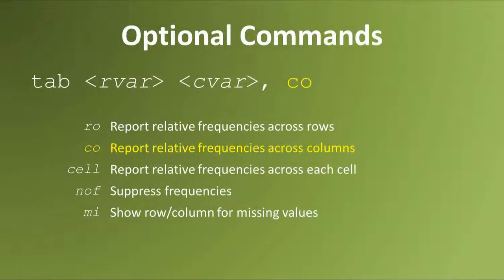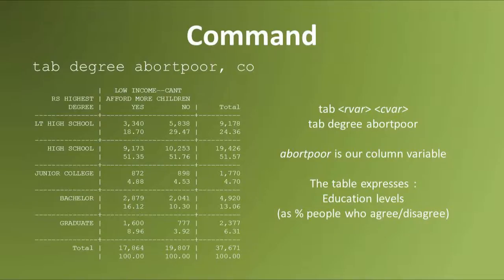The co option is short for column. It asks Stata to report relative frequencies across columns. In this example, we get the percentage of people who agree with abortion for reasons of poverty according to each educational level. We see that about 9% of the people who agree come from graduate school, and about 19% did not complete high school. Among those who oppose abortion for reasons of poverty, only 4% come from graduate school graduates, and about 29% come from high school dropouts.